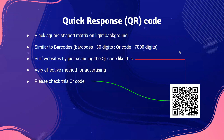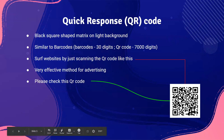Quick Response code, commonly known as QR code, is an extension of barcodes. They look like black squares painted onto a white sheet, but they are a very effective method of advertising, gaining popularity nowadays. A barcode can only store up to 30 characters of data, but a QR code can store up to 7,000 characters of data. You can scan a QR code to instantly visit a desired website instead of typing in the URL.